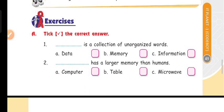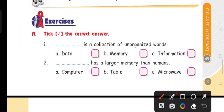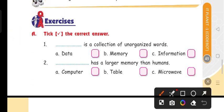Take the correct answer. The first question: dash is a collection of unorganized words. So data. We have already read in my previous video that data is a collection of unorganized words.